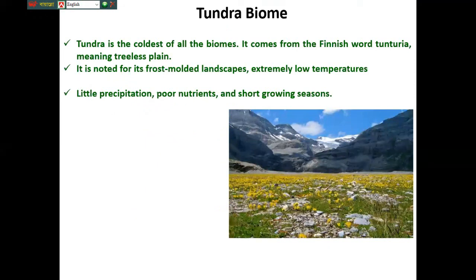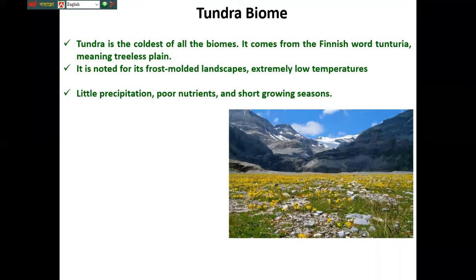Now, the tundra biome. The tundra is the coldest of all the biomes. It comes from the Finnish word 'tuntriya', meaning the treeless plain. It is noted for its frost-molded landscape and extremely low temperatures — around minus 20 degrees. The precipitation is very minimal and nutrients are poorly available.